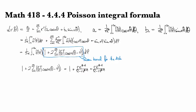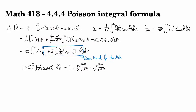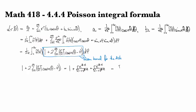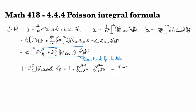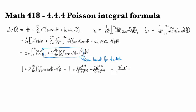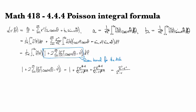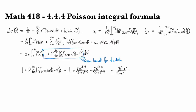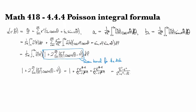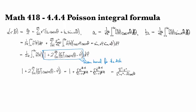And then we can combine to put these over the same common denominator. And we get R² - r², all over R² - 2rR cos(θ - φ) + r².